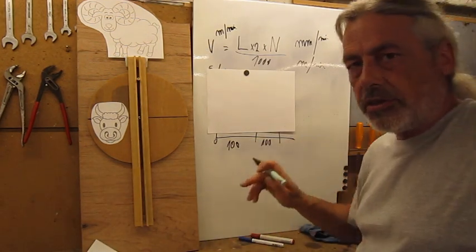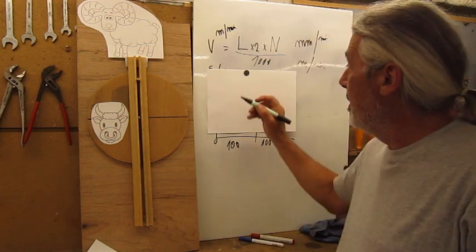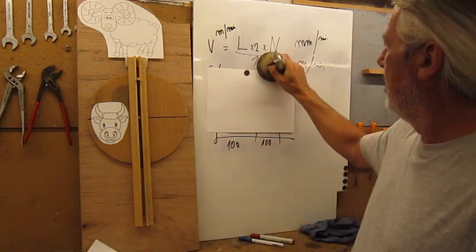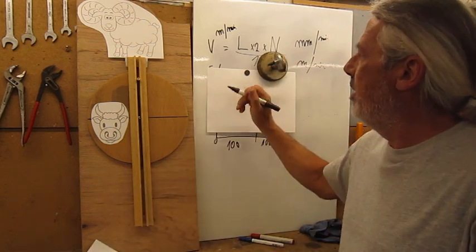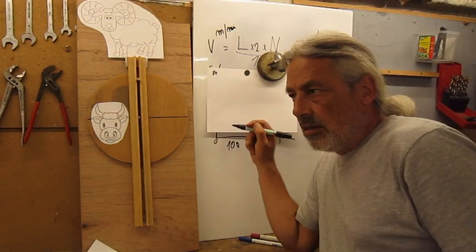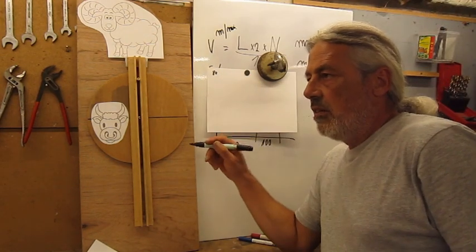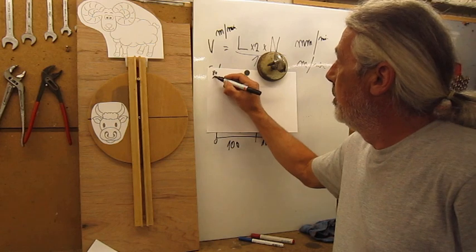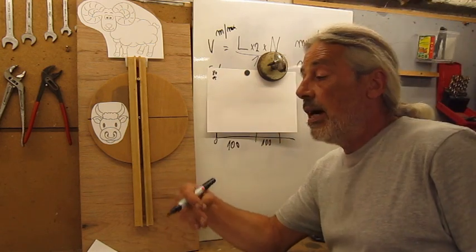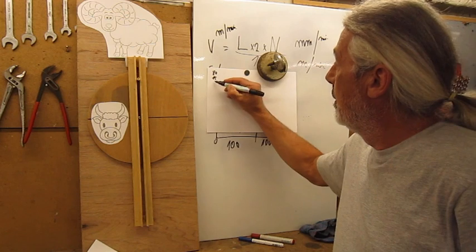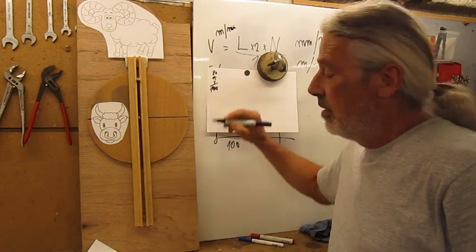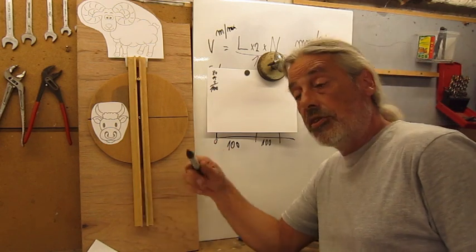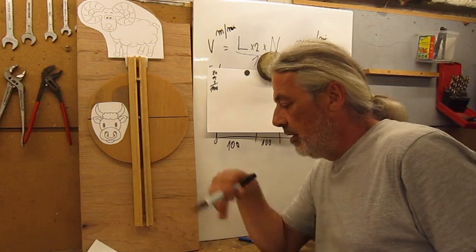Let's make the easy calculations. If my workpiece is 80mm, I add 15mm before the tool starts to cut and 5mm after the cut. Total stroke length: 100mm. I like these round numbers, that's why I chose this example.